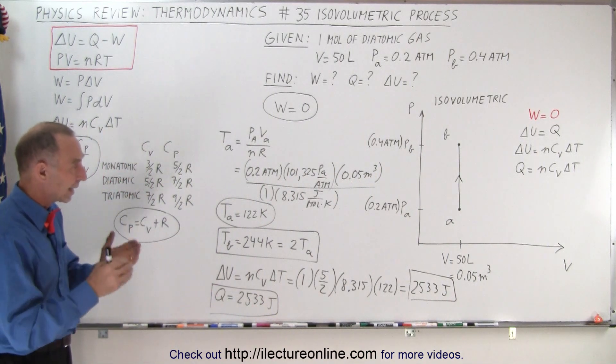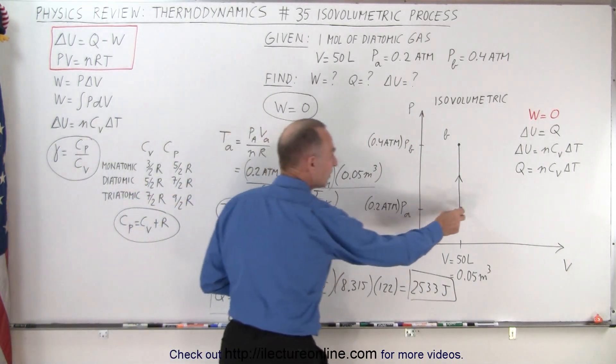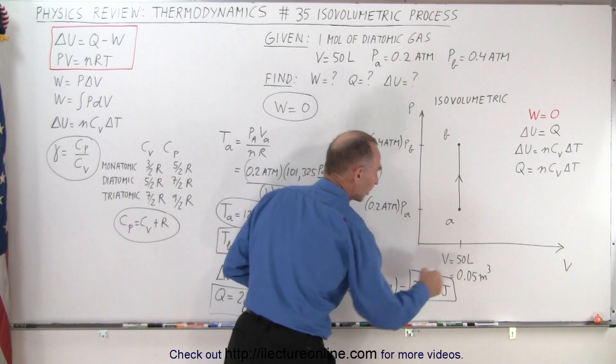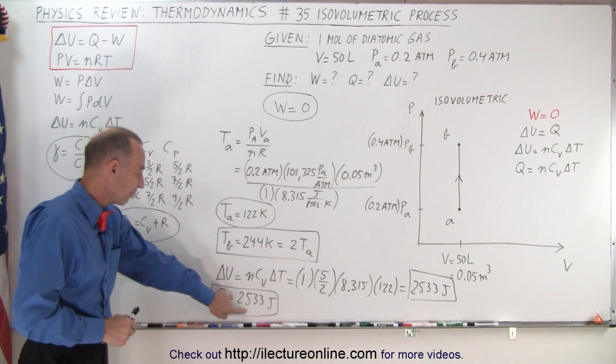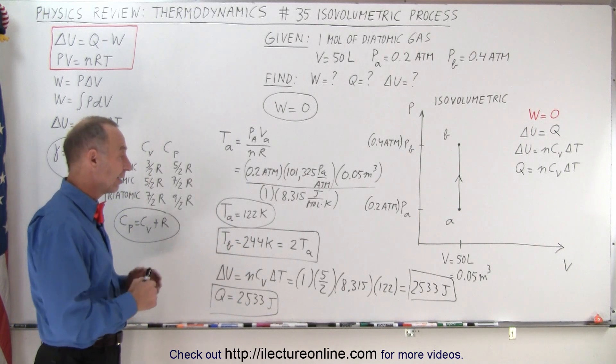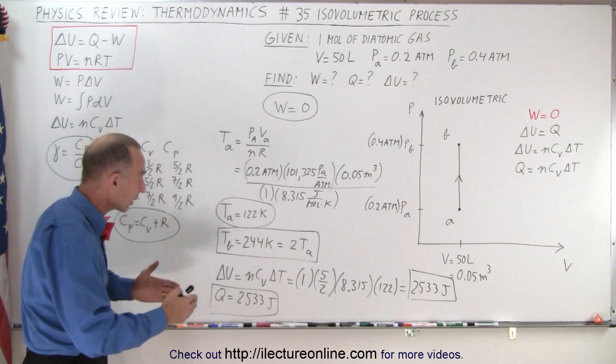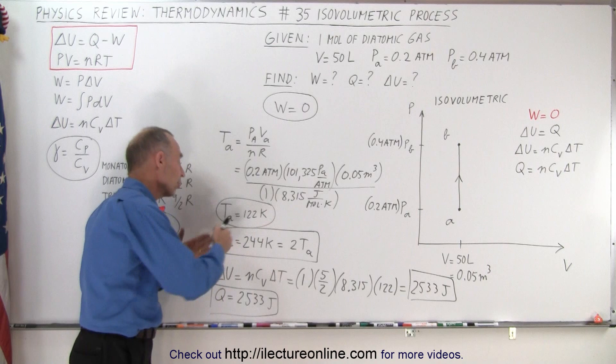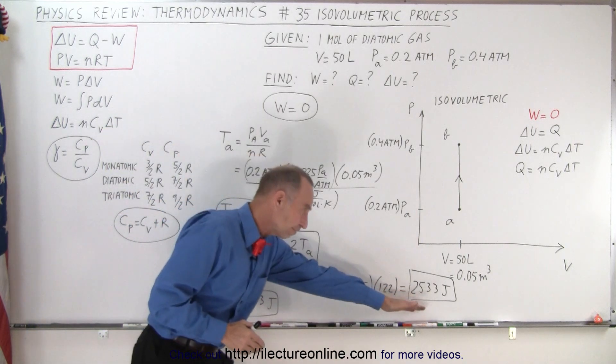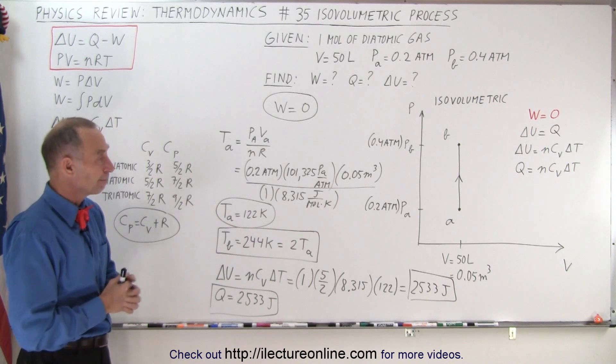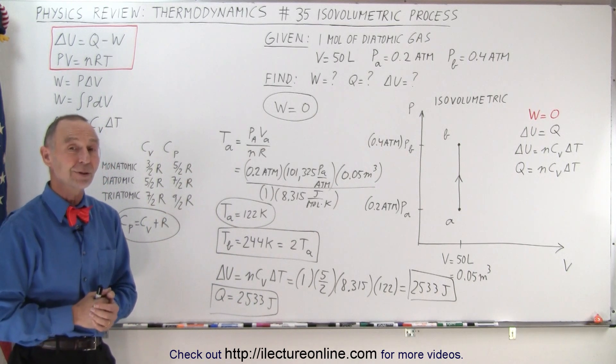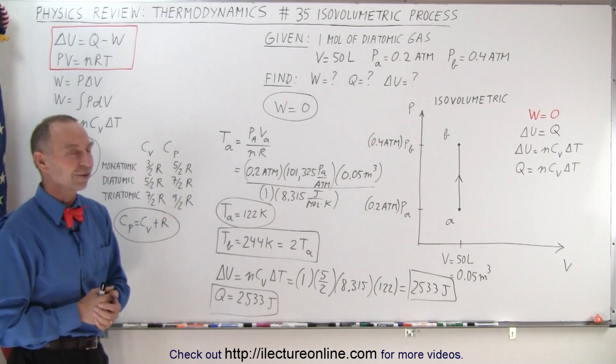So the result is that we had a gas at initial conditions of A, initial pressure, initial volume. We added heat. How much heat did we add? 2533 Joules of heat. Since the gas didn't do any work, all that heat went into the increase in internal energy, which is also 2533 Joules. And that is how it's done when you have an isovolumetric process.